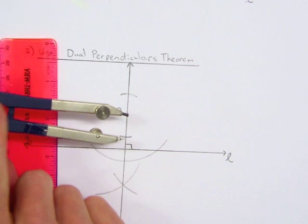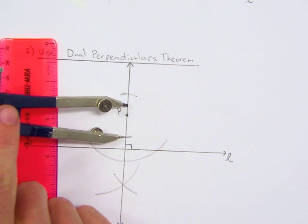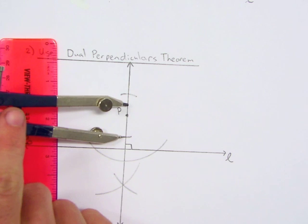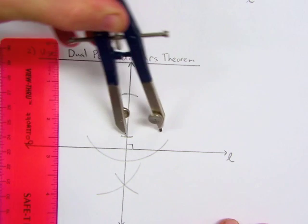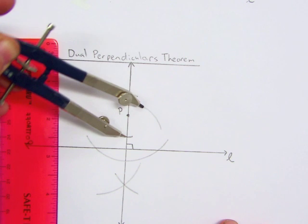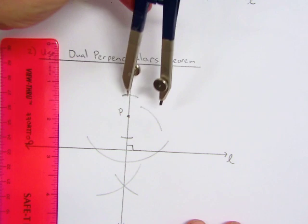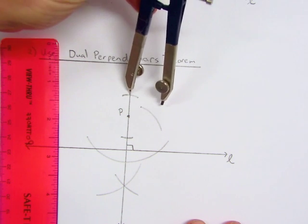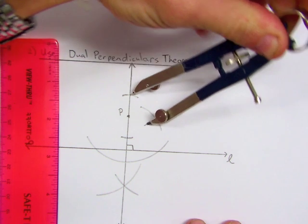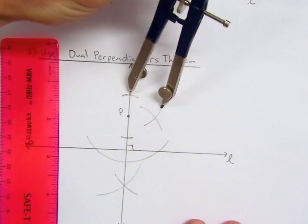Now open your compass up a little bit more, so it's a little more than half. Draw one arc from the intersection. And using the same measure, draw another arc from the other intersection so that the two arcs intersect.